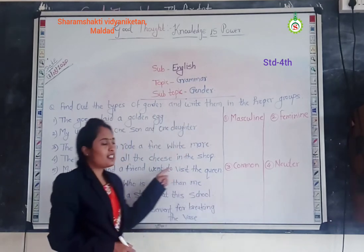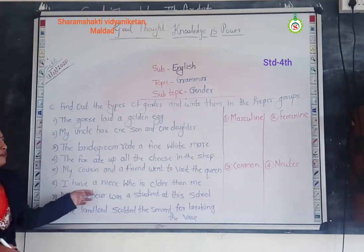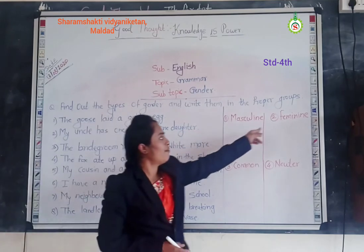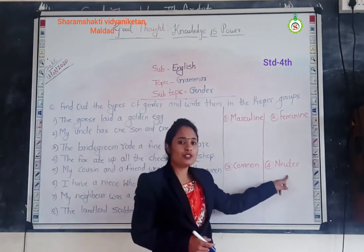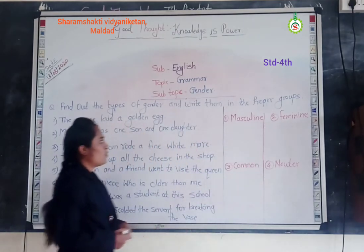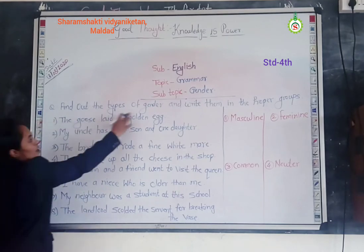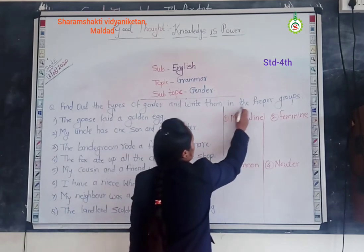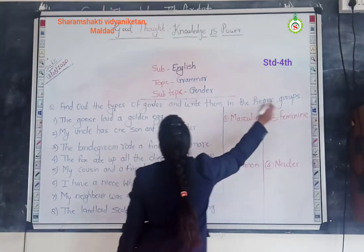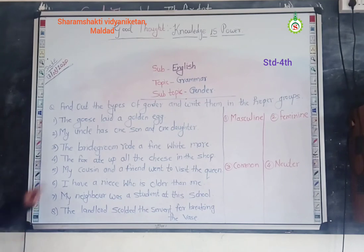So, I have some sentences. Now we will find out masculine gender, feminine gender, common gender, and neuter gender. The first question: find out the types of gender and write them in the proper groups. There are 4 groups. Now we will see the first sentence.